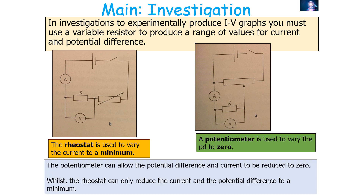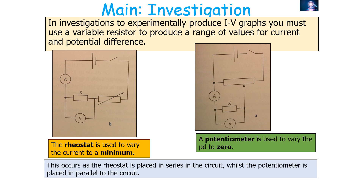It's important to note that the potentiometer can allow the potential difference and the current in a circuit to be reduced to zero, whilst the rheostat can only reduce the current and the potential difference to a minimum. The reason for this is that the rheostat is placed in series in an electrical circuit, whilst the potentiometer is placed in parallel.